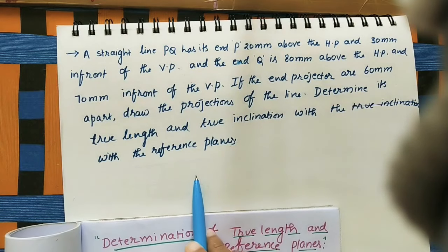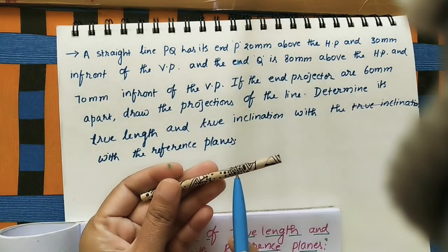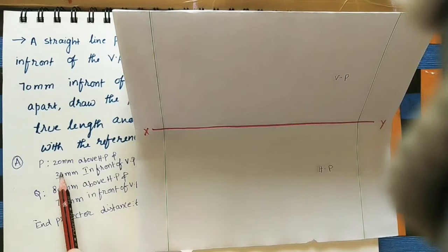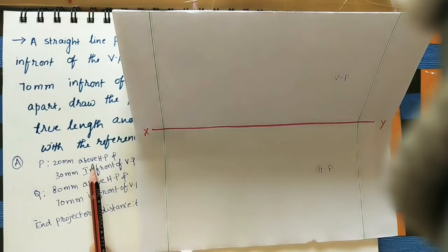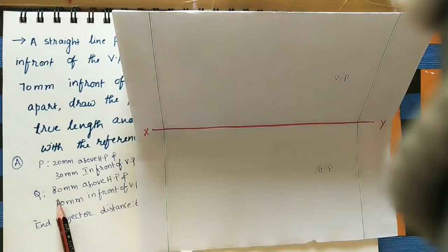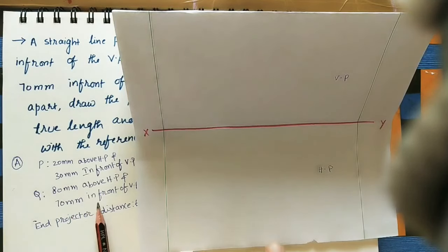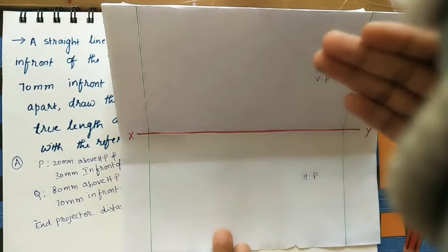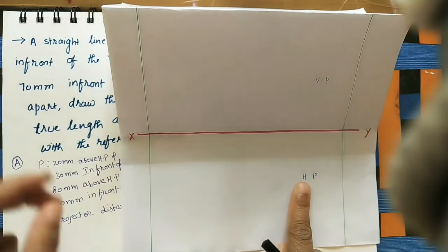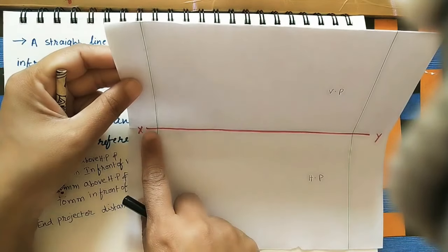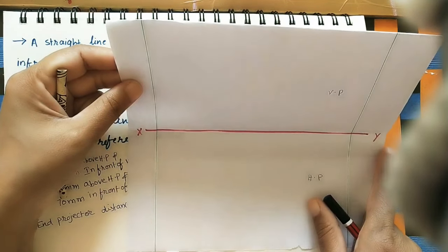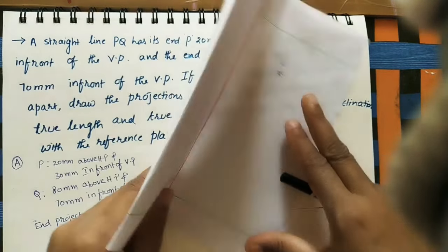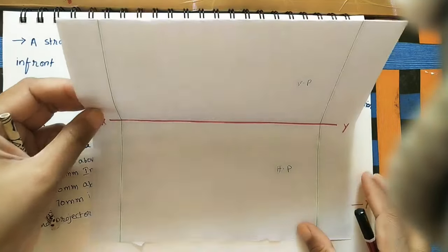First, write the given data. After that, we will take the position of this line, and from the front view and top view we can find the true length. Here I have written the given data. For showing the position of these two points, I am taking this as the vertical plane and this as the horizontal plane. The angle between these two planes is 90 degrees, and the line joining both planes is the XY line, which we can also call the reference line. This is the first quadrant.